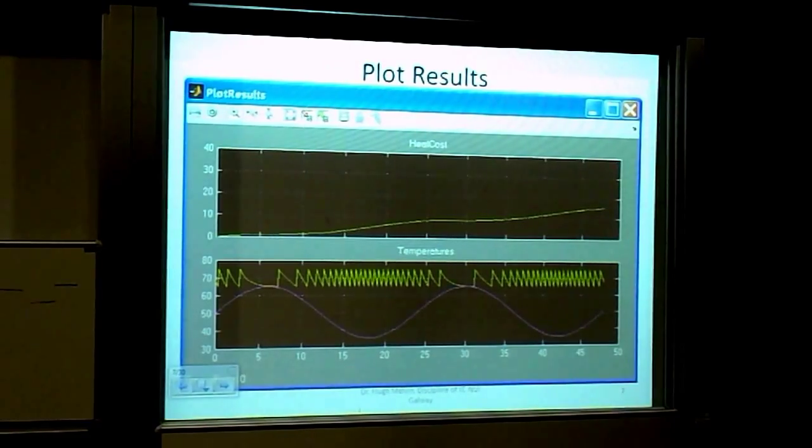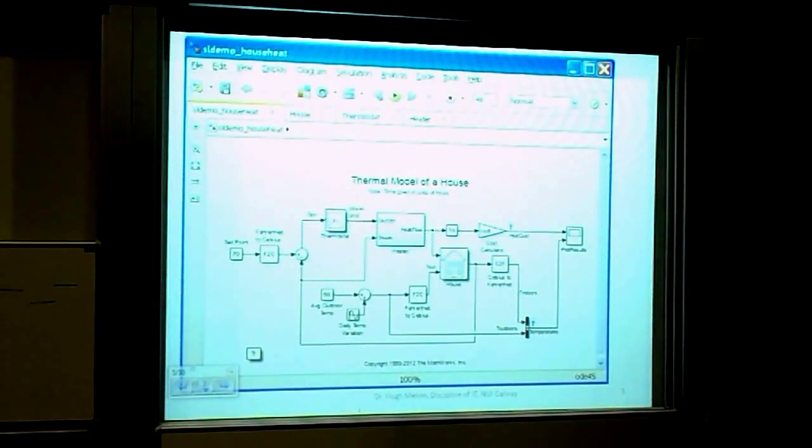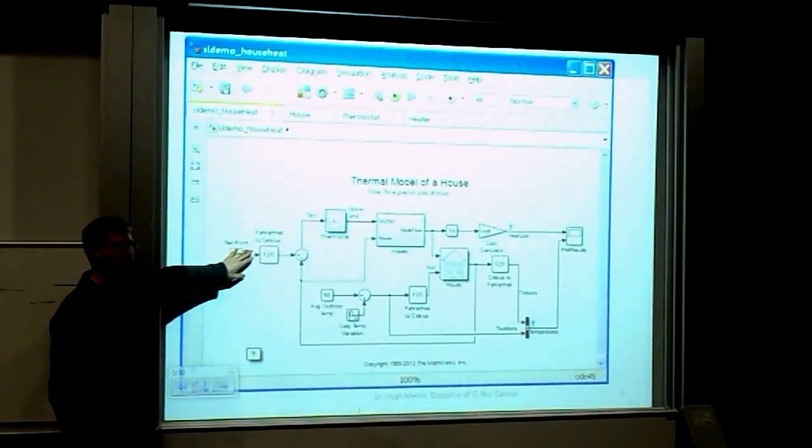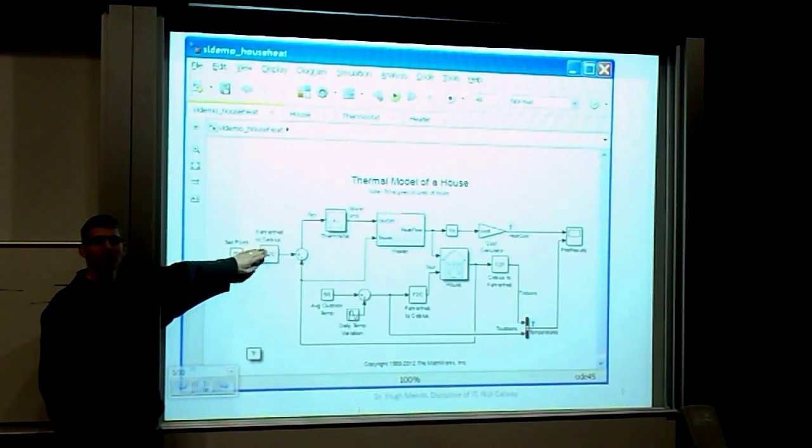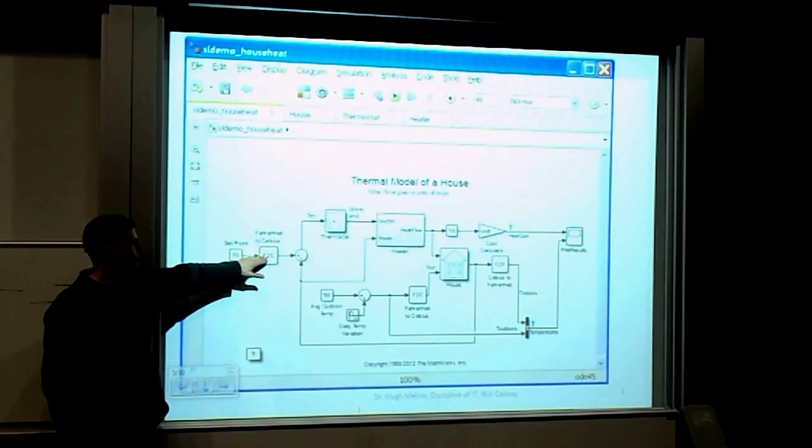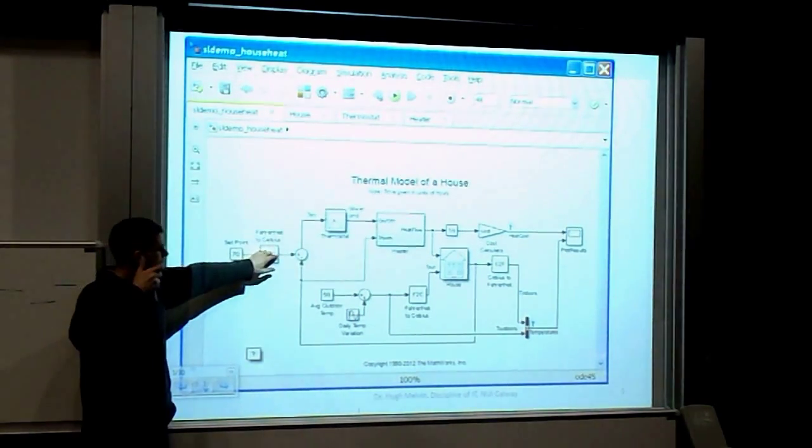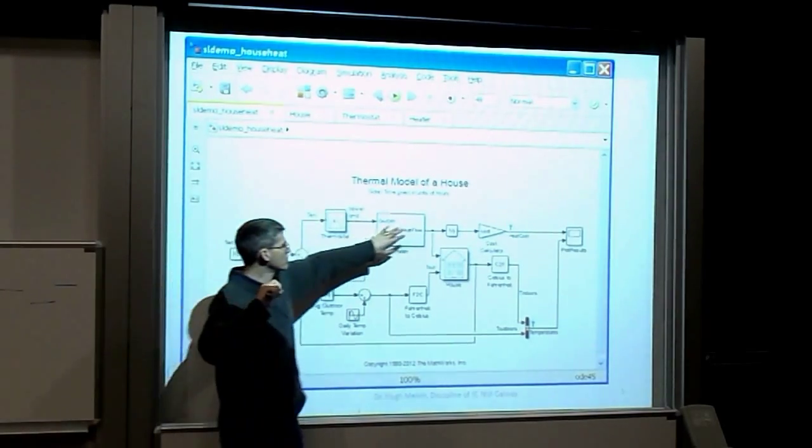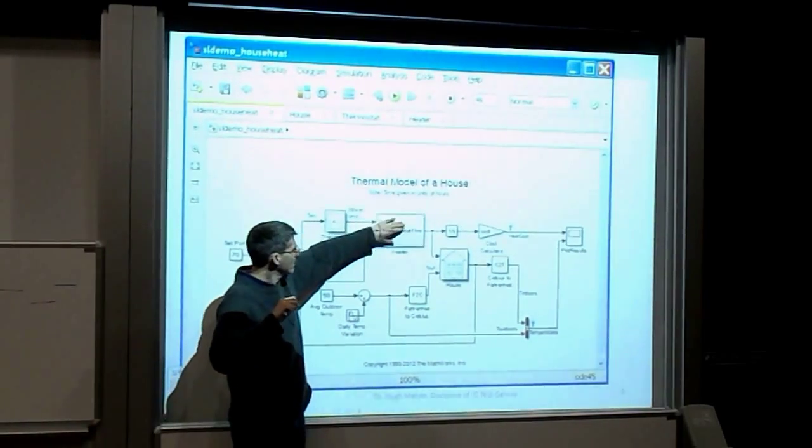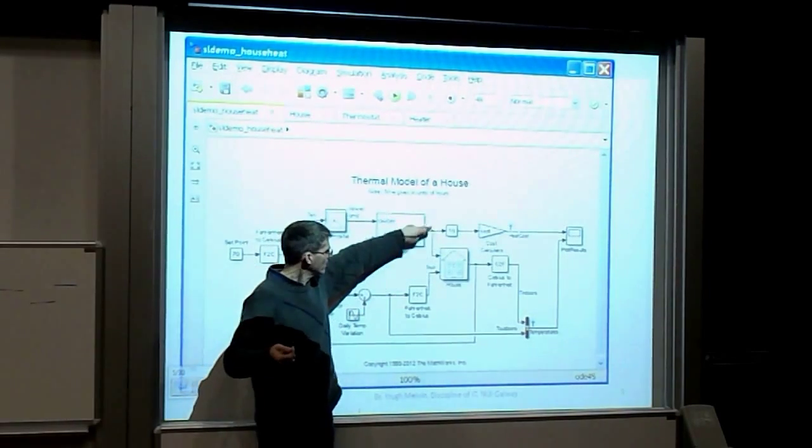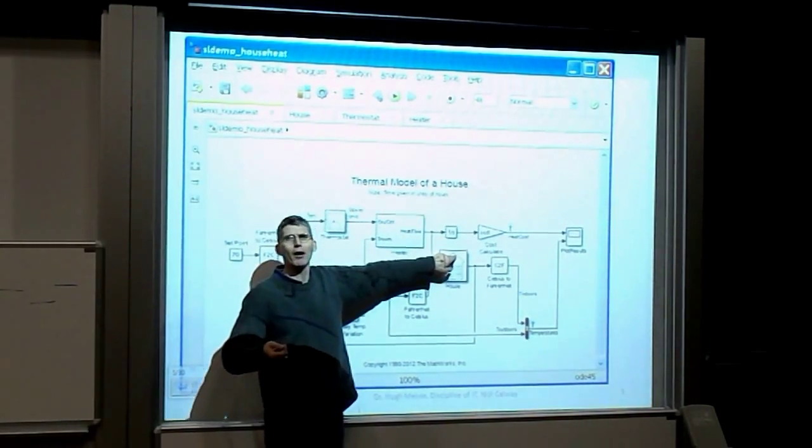Here's our target. We want 70 degrees Fahrenheit in our house. That's our target, thermostat on the wall. To generate the heat, we have a heater here. The heater generates so many joules per second of energy. Those joules per second go into our house.